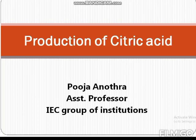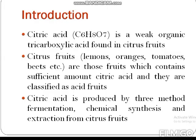Welcome back to the channel. Today we will talk about the production of citric acid. Citric acid is a weak organic tricarboxylic acid found in citrus fruits such as lemon, orange, tomatoes, and beets. These fruits contain sufficient amounts of citric acid and are classified as acid fruits. Citric acid is produced by three different methods: fermentation, chemical synthesis, and extraction from citrus fruits.